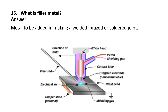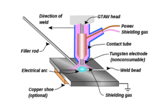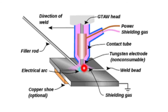Next question: what is filler metal? Filler metal is the metal to be added in making a welded, brazed, or soldered joint. Here you can see the schematic of GTAW — gas tungsten arc welding — in which a filler metal, the filler rod, is supplied during the process of welding.